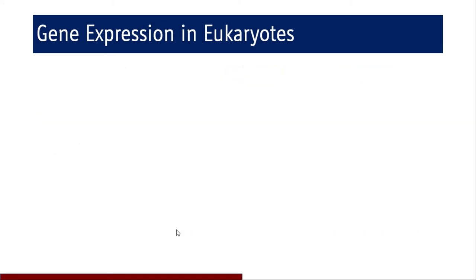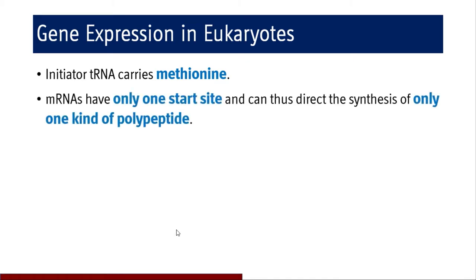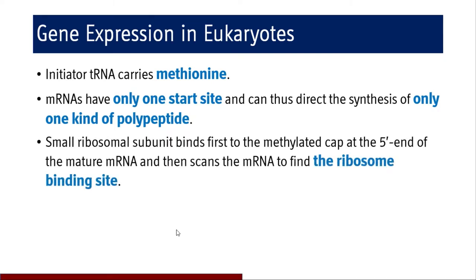At the translation level, the initiator tRNA carries methionine. mRNAs have only one start site and thus direct the synthesis of only one kind of polypeptide — from one start site in one direction, only one kind of polypeptide. The small ribosome subunit binds first to the methylated cap at the 5' end of the mature mRNA and then scans the mRNA to find the ribosome binding site.